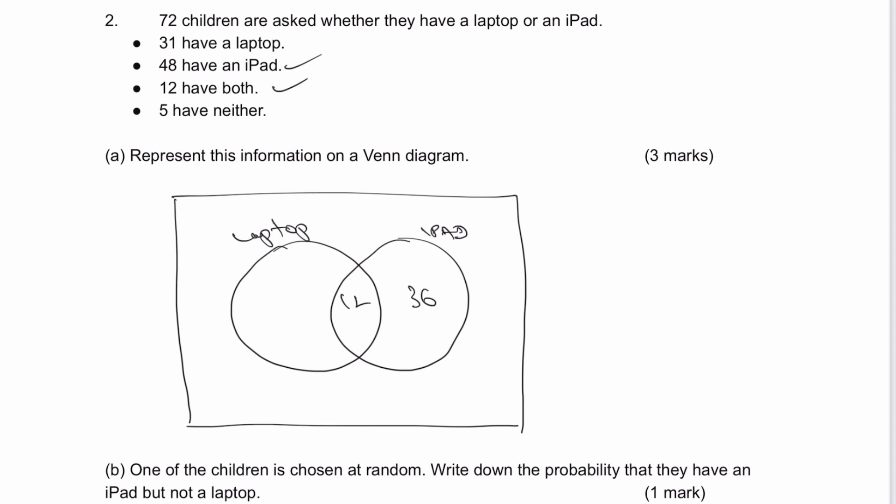whereas 12 have an iPad and a laptop. Let's have a look at the laptop information, which says 31 have a laptop. Well, 12 of them happen to have an iPad, but it does mean that 19 only have a laptop.